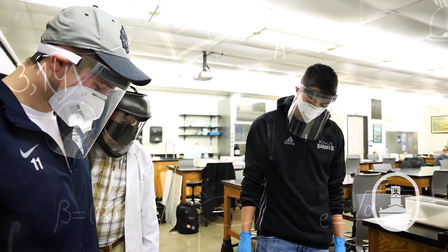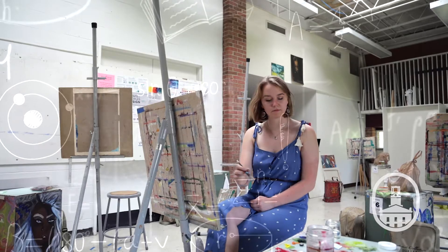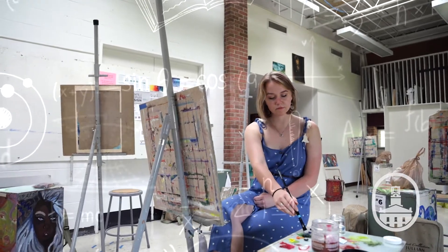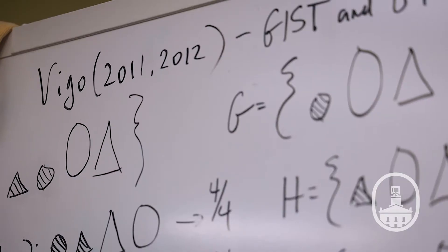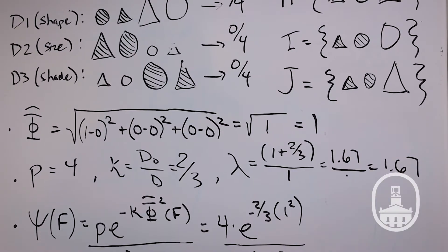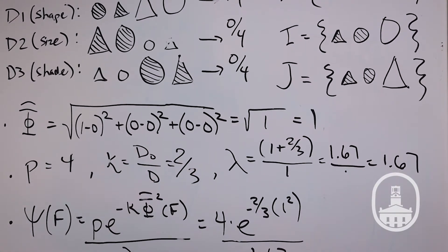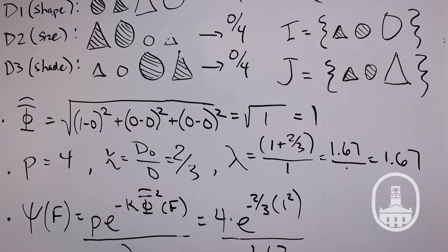Information is a term that's usually loosely used across many different domains. Here in the psychology department, I use some of the information you see behind me — some of these equations — to actually mathematically try to describe what information is from a psychological perspective.